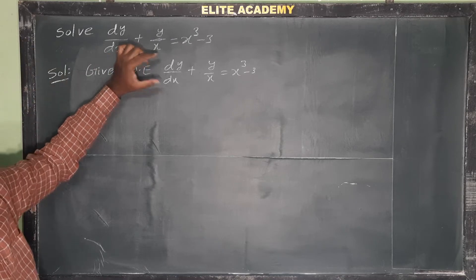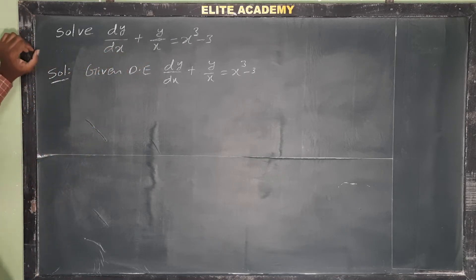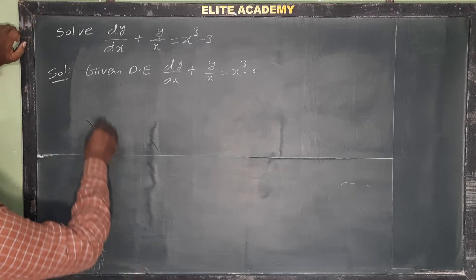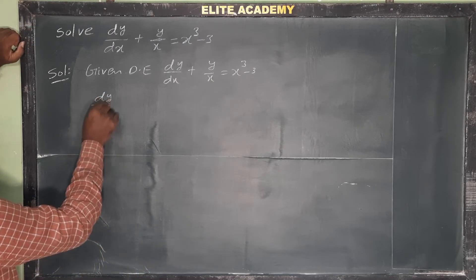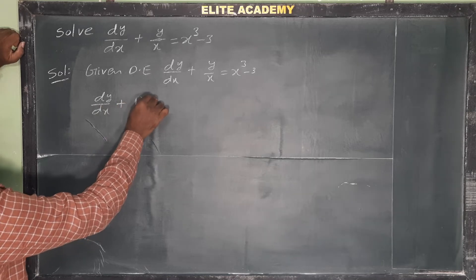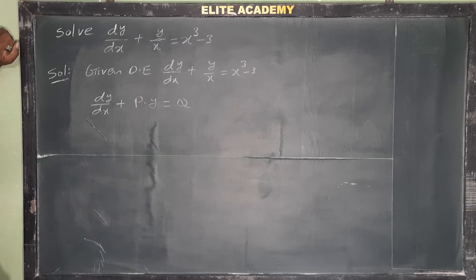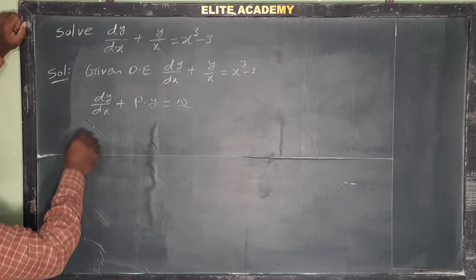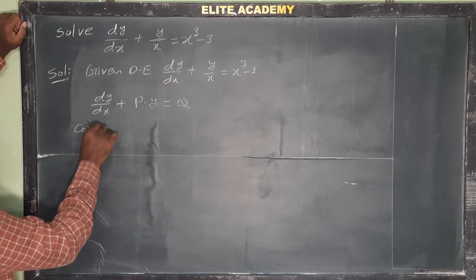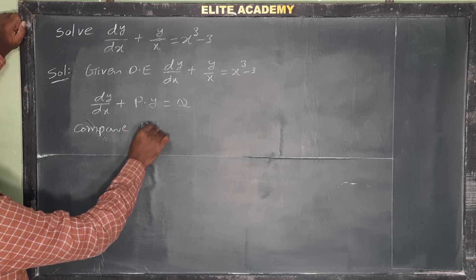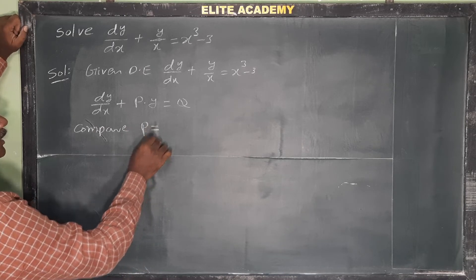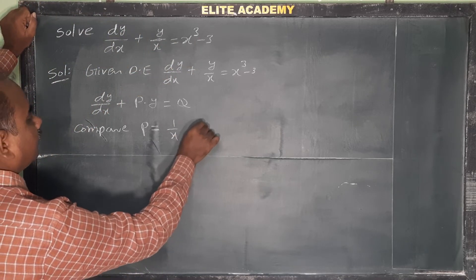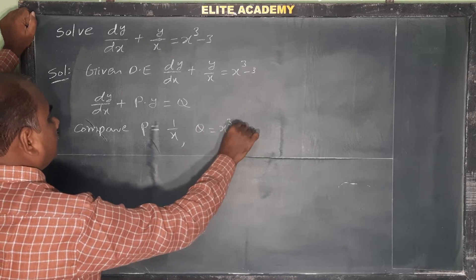Let's check the general formula. Clearly it is in general form dy/dx + P·y = Q. Comparing, we get the values of P and Q: P is equal to the coefficient of y, which is 1/x, and Q is equal to x³ - 3.